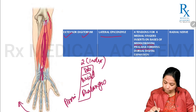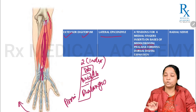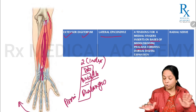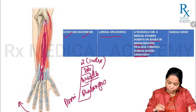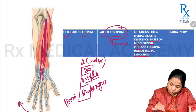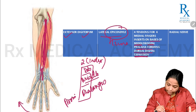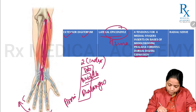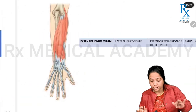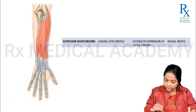The four tendons of extensor digitorum each insert onto the base of the middle and distal phalanx of the second, third, fourth, and fifth digits, forming a dorsal digital expansion. You can see in this diagram how the tendons insert onto both the middle and distal phalanges of the medial four digits. Extensor digitorum is supplied by the radial nerve.